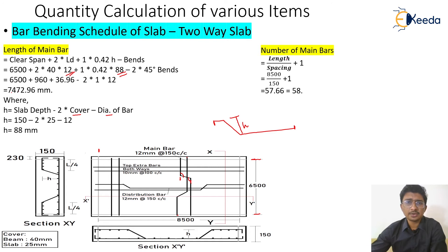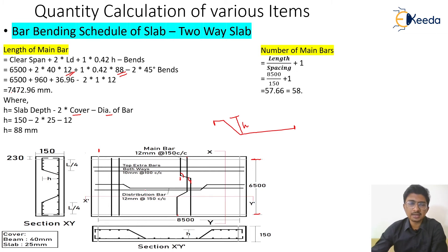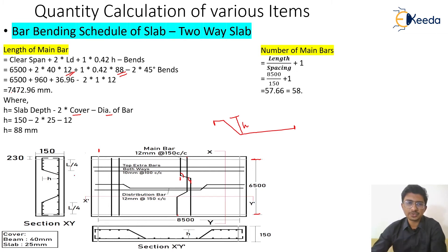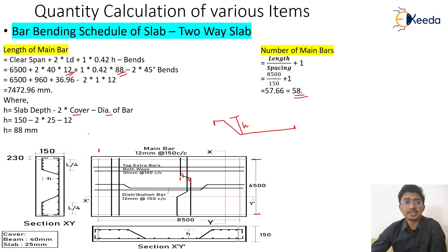To calculate the number of main bars, we use the formula: length divided by spacing plus one. The main bars serve the longer dimension, so 8500 divided by 150 plus one gives the number of main bars as 58.